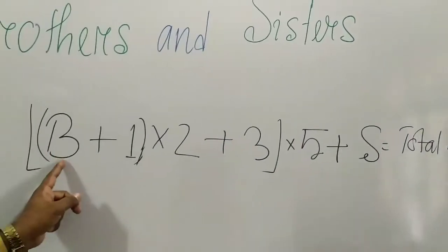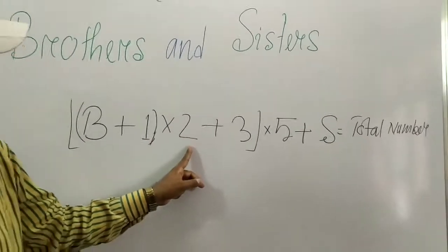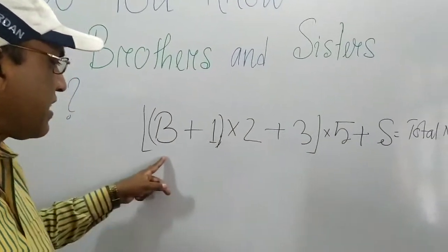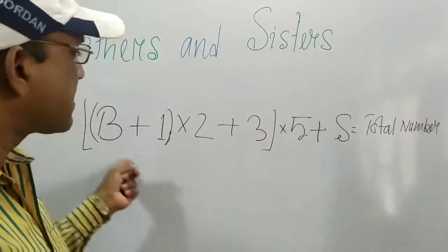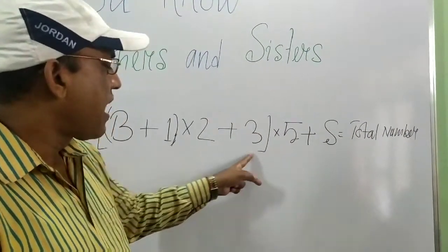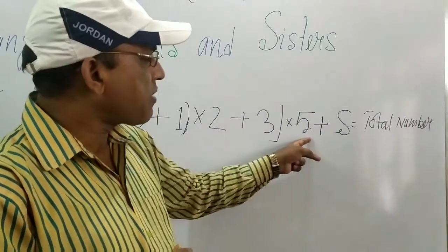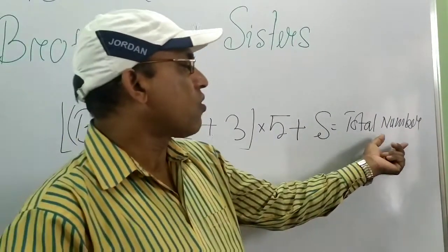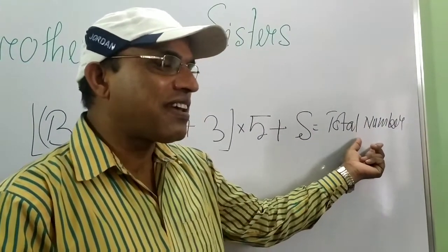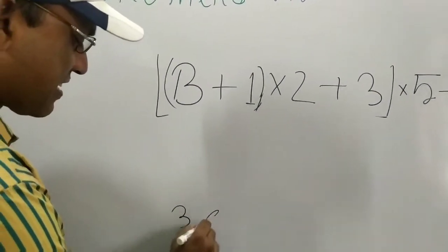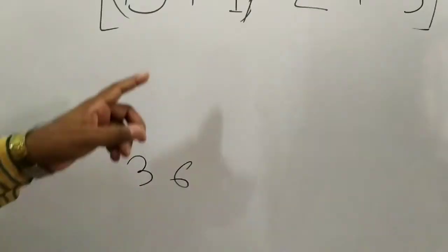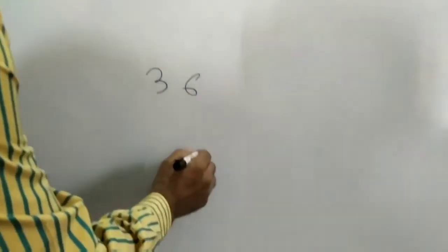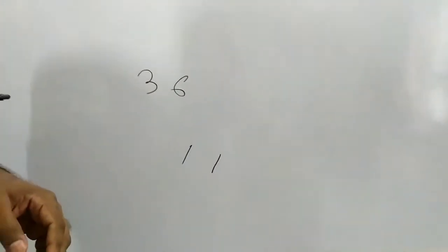So first: brother plus 1, into 2 — we get a result. Then adding 3, we get a result. This result multiplying by 5, and after multiplying by 5 we get a total number. Then add the total number of sisters. We get a total number. Suppose your result is 36 — then you have 1 brother and 1 sister. This is our formula.